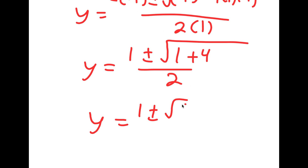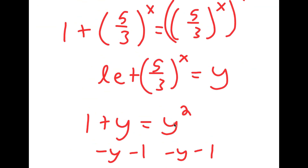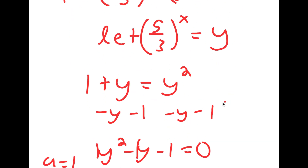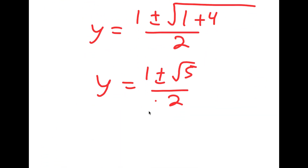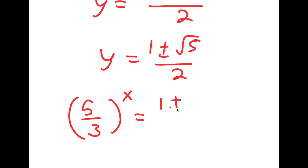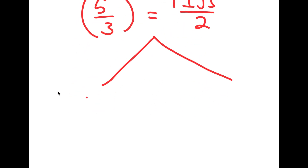So I have 5 over 3 to the power of x equals 1 plus or minus the square root of 5 over 2. This gives me two equations.